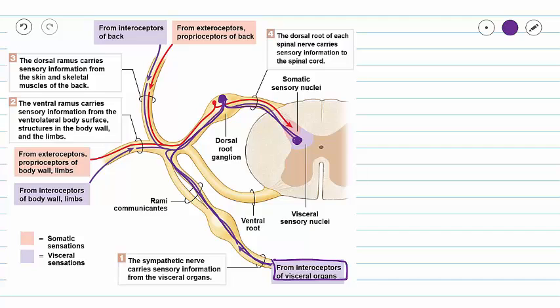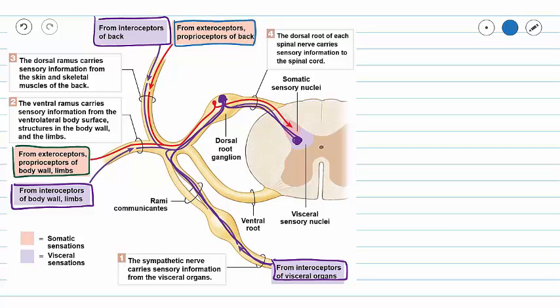So this picture is showing us sensory information. We can also bring visceral sensory information in from our ventral and dorsal rami, and we can carry somatic sensory in from our body wall and limbs, or somatic information in from our posterior body wall and limbs. So these are just great summary pictures.